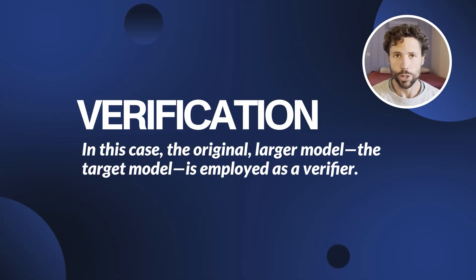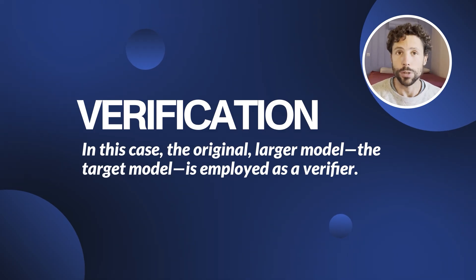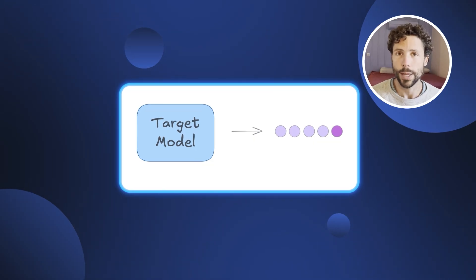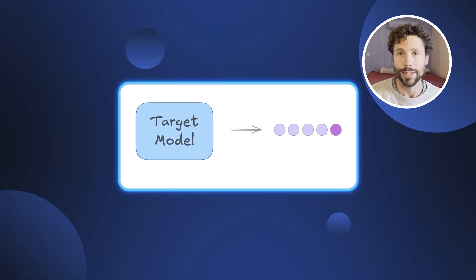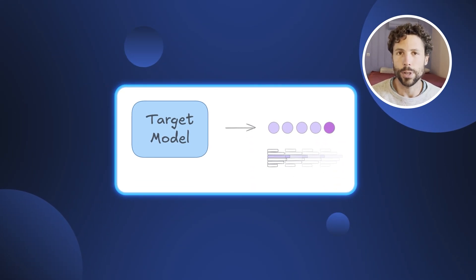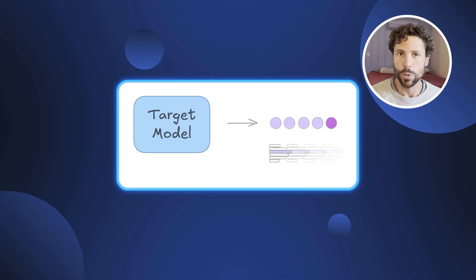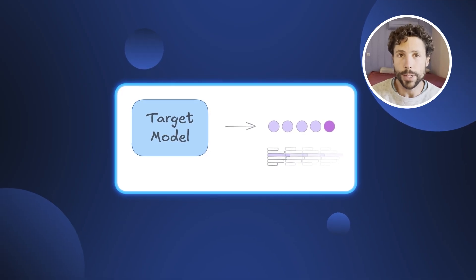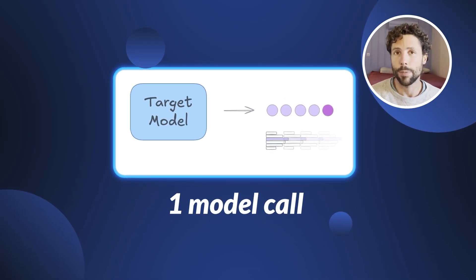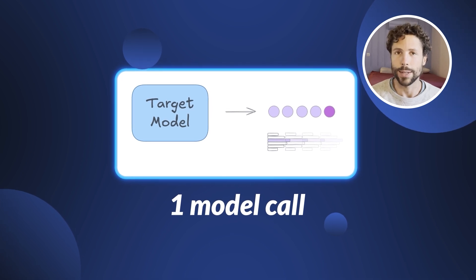The second step is verification. Here, a target model — the original, larger model — is used as a verifier. With a single forward pass, it is evaluated on the whole sequence, that is, the prefix sequence plus the 5 draft tokens, and this yields 6 next-token distributions, which are cached in memory — one for the prefix sequence, and one for each token position. Note that this step has required only a single forward pass from the large model so far.